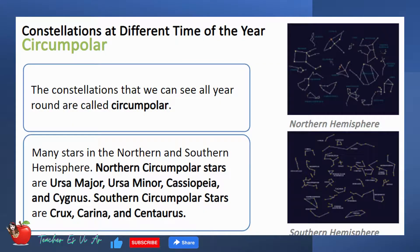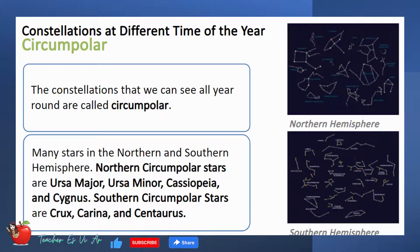There are also stars that can be seen clearly all year round. They are called circumpolar stars, found in many northern and southern hemisphere regions. Northern circumpolar stars are Ursa Major, Ursa Minor, Cassiopeia, and Cygnus. Southern circumpolar stars are Crux, Carina, and Centaurus.